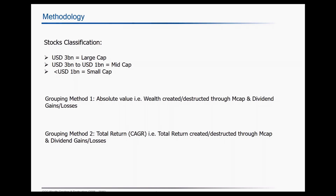We have used two different methodologies to identify and group the stocks. First, we identified wealth creators and destructors in terms of absolute value — that is, in terms of value gain through capital gains and dividend gains or losses. The second method is through absolute total return, where we identified stocks that created or destructed wealth both in terms of market cap and dividend, but measured in terms of total return.